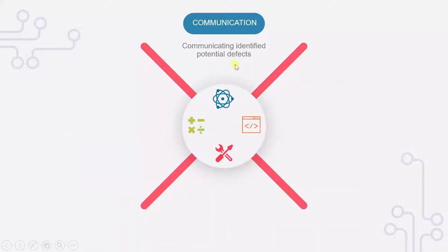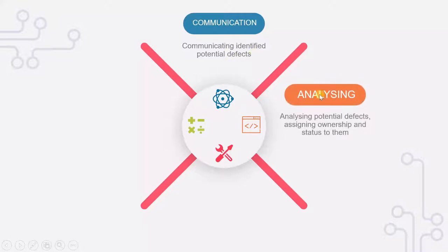Once the defects have been communicated, we have to perform an analysis on them — which are actual defects and which are not. Once it is confirmed that the defects found by the reviewer are correct, we have to assign ownership for those defects — who will fix them. Most of the time it is the author, the person who developed that document.